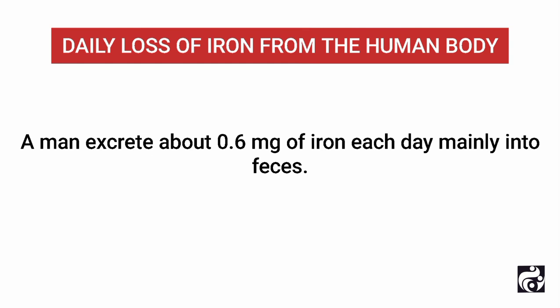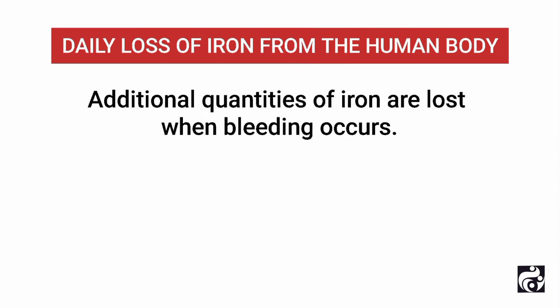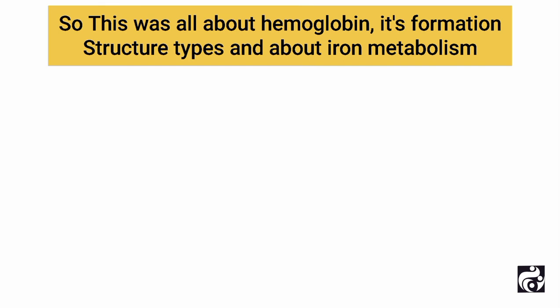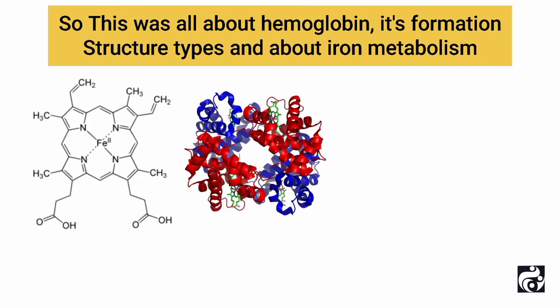A man excretes about 0.6 milligrams of iron each day, mainly into the feces. Additional quantities of iron are lost when bleeding occurs. For a woman, additional menstrual loss of blood brings long-term iron loss to an average of about 1.3 milligrams per day. So this was all about hemoglobin — its formation, structure, types, and iron metabolism.